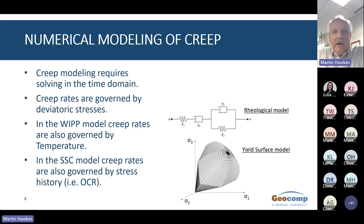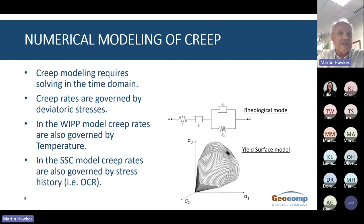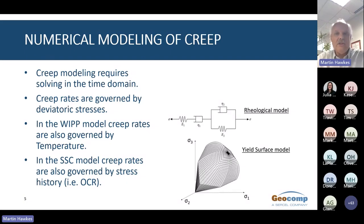Creep is a time-related phenomenon. Therefore, modeling creep always requires stepping through time. This is different from solving in stages, where each stage is related to some change in the model. Creep will cause changes in deformation and stress in the model as time increases, even when nothing else has changed. The rate of creep depends on deviatoric stress, over-consolidation, and time. Defining a single creep rate in terms of strain or void ratio per log of time leads to much confusion about the appropriate timescale, especially when creep is altered by a change in construction activity.